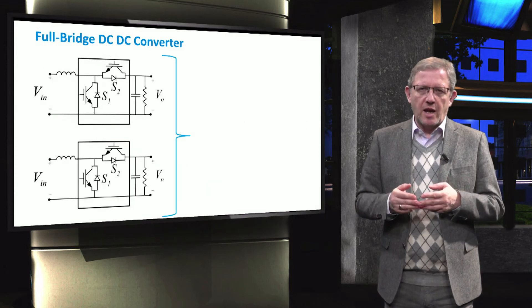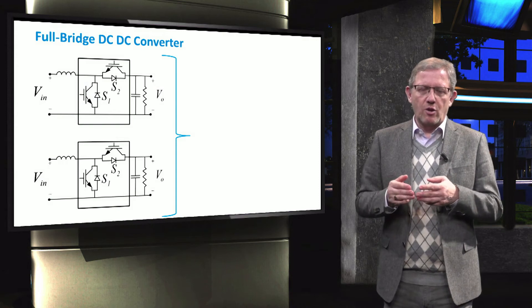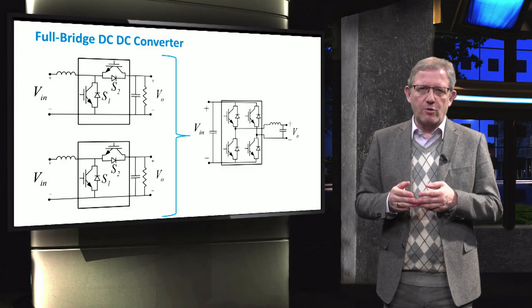Indeed in the next step, we can create a more detailed converter by using two buck and boost converters, the so-called full bridge. Full bridge will provide four-quadrant power flow capabilities.